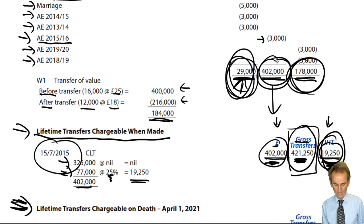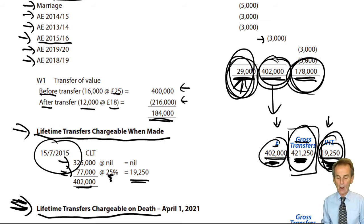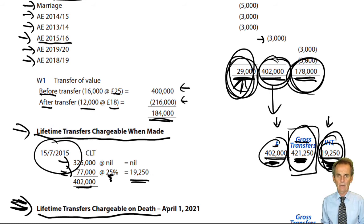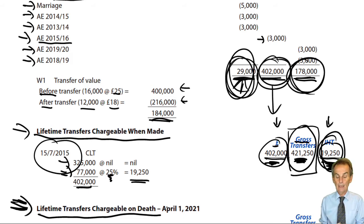Even before we reduce the tax charge within the lifetime transfers chargeable on death computation by the amount of lifetime tax paid, there is another deduction available — not just to CLTs but also to PETs. Any transfers now chargeable on death because they were made within the seven years before the date of death, if they are more than three years from the date of death, then taper relief is available. So now you need to put together that computation — just gross transfers and IHT columns — going through in chronological order.